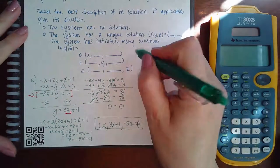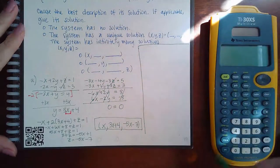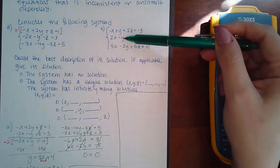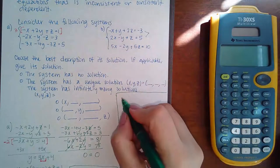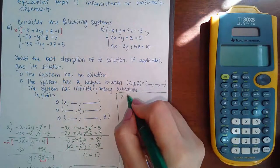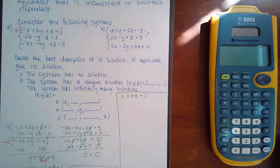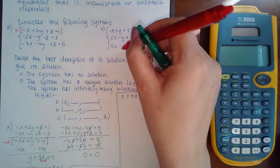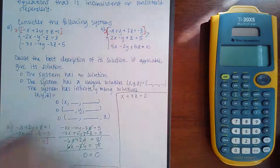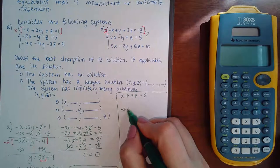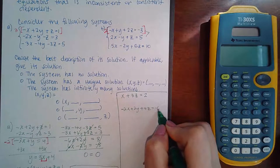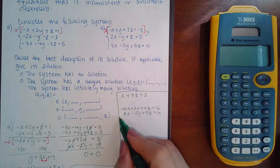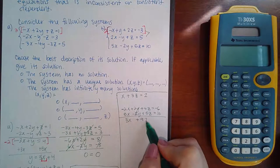Now let's move on to system B. It looks like I can eliminate y pretty easily here. Combining the first two equations gives me positive x, the y's cancel, positive three z, and positive two. For the third equation I need to eliminate y as well, so I multiply the first equation by two to get negative two x plus two y plus four z equals negative six, then add the bottom equation. Combining gives me three x, the y's cancel, nine z, equal to four.